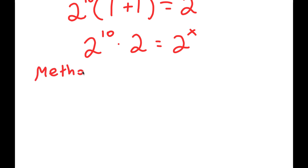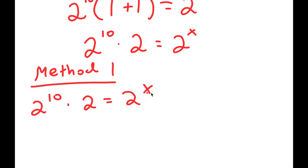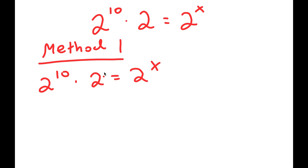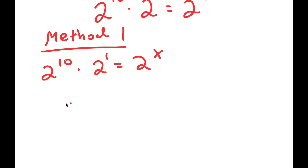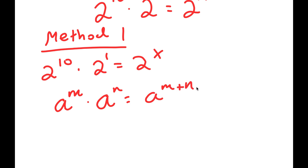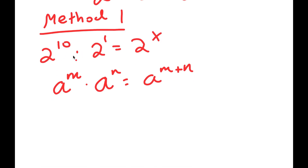For method 1, I have 2 to the power of 10 times 2 is equal to 2 to the power of x. I'm going to rewrite 2 as 2 to the power of 1. Now if I have something in the form a to the power of m times a to the power of n, this equals a to the power of m plus n. So 2 to the power of 10 times 2 to the power of 1 equals 2 to the power of 10 plus 1, which is 2 to the power of 11.